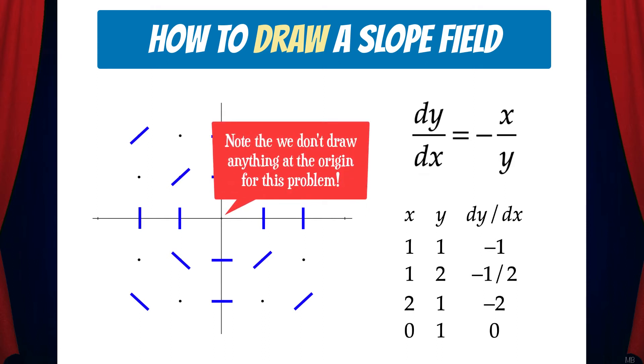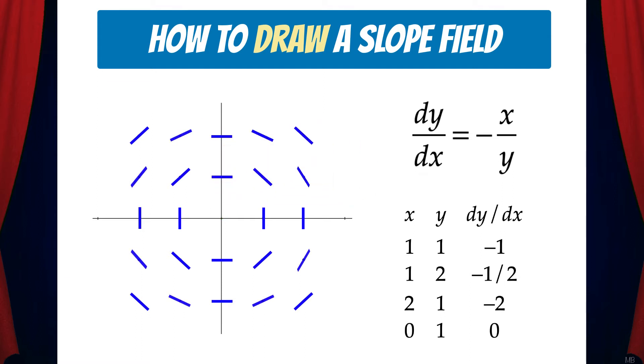Note that we don't draw anything at the origin for this problem. If we plug in (0,0) to the differential equation, we get an indeterminate form. And so now we can start to see a picture of the solutions to this differential equation. And we can see that the solution curves are circles.